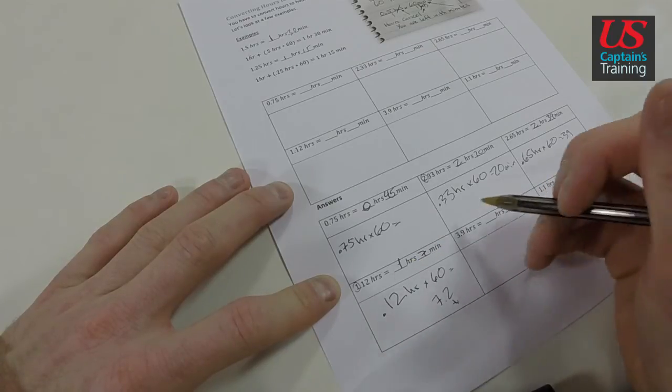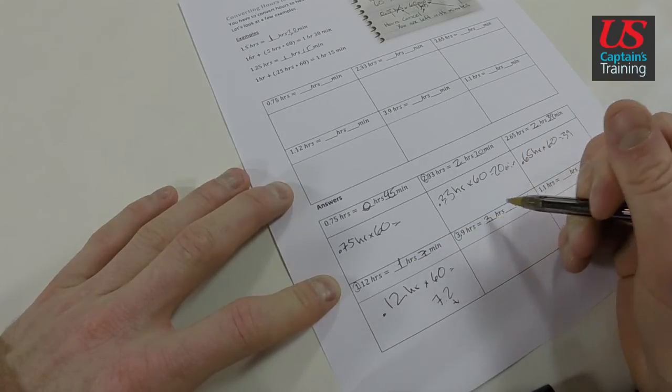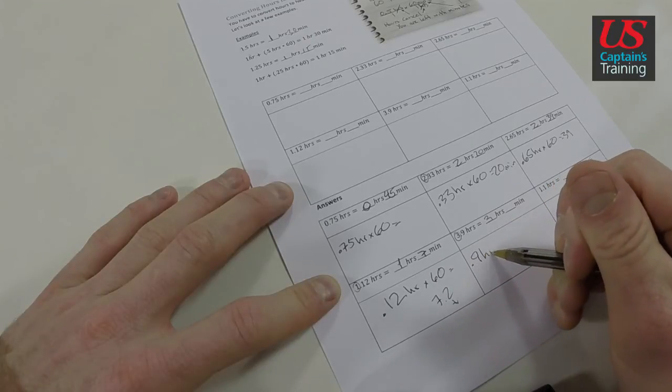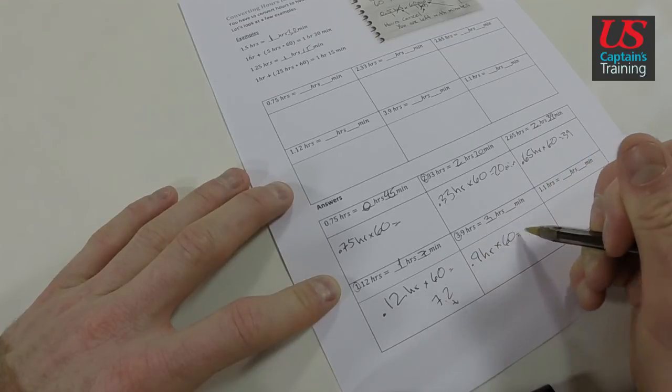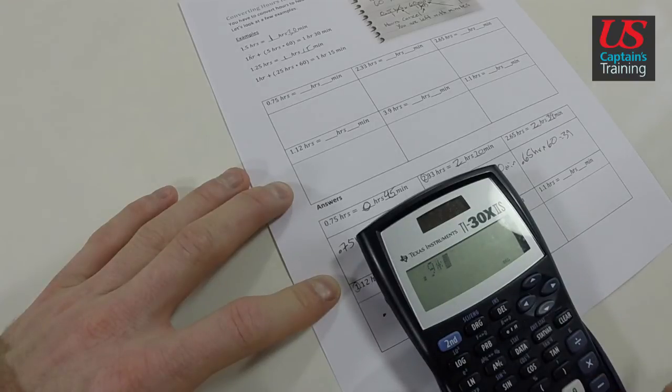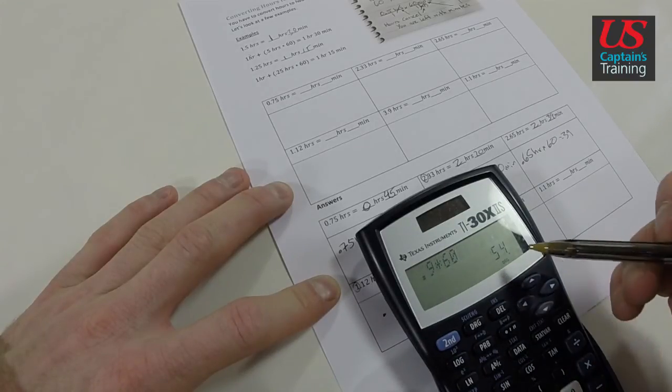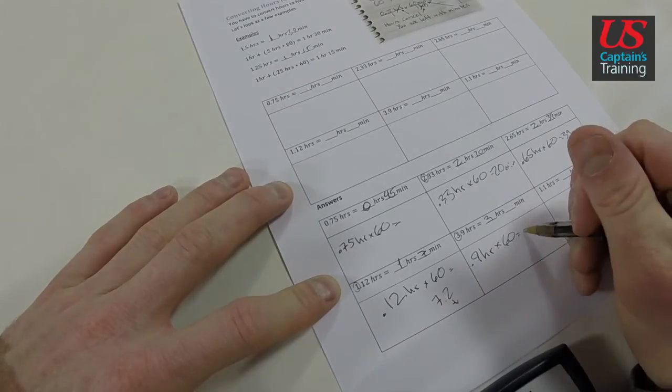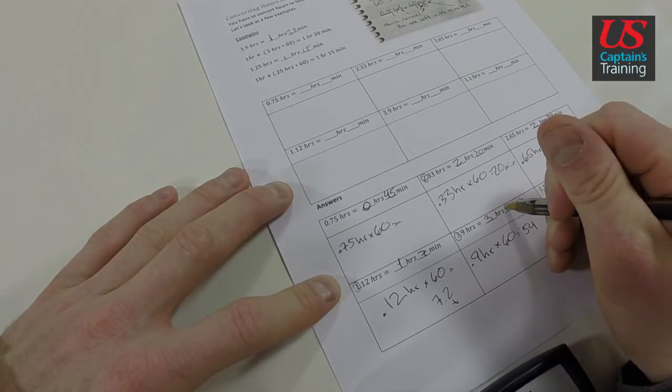3.9 hours. We take this 3 - this is 3 hours. 0.9 hours times 60 equals - get our calculator - 0.9 times 60 equals 54 minutes.